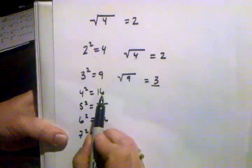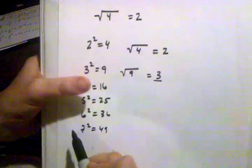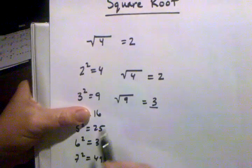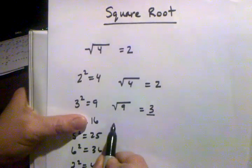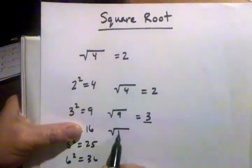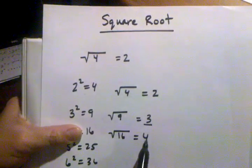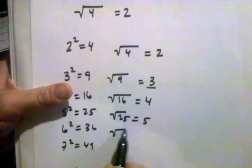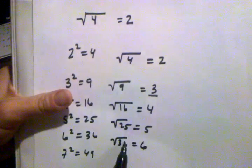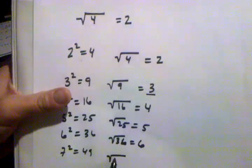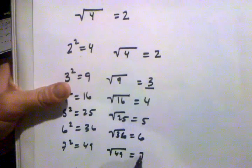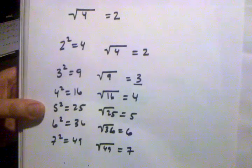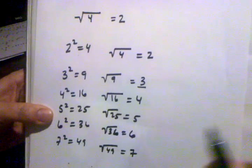Now if we do this in reverse: if I want to find what number multiplied by itself two times gives me sixteen, that means I'm taking the square root — it happens to be four. So the square root of twenty-five is five, the square root of thirty-six is six, and the square root of forty-nine is seven.